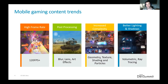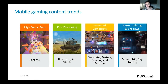In terms of the content we are seeing in games, there are four key features that we are seeing more demand for. The first is a smooth gaming experience — mobile devices are shifting to a 120Hz refresh rate. Post-processing is another feature, with effects such as bloom, lens flare, depth of field, and cinematic filtering. We're also seeing an increase in the complexity of scene geometry and textures. And lastly, lighting is a key driver — more light sources and how those lights interact with objects in the scene.